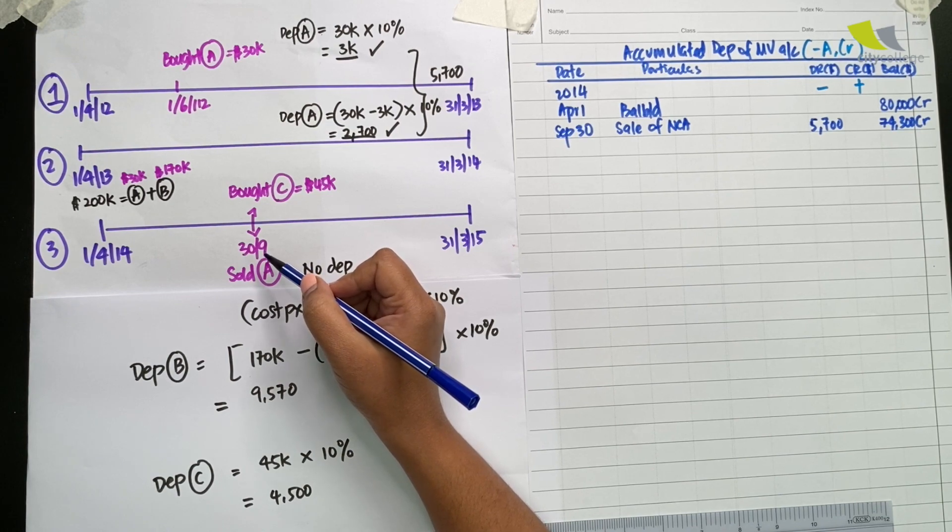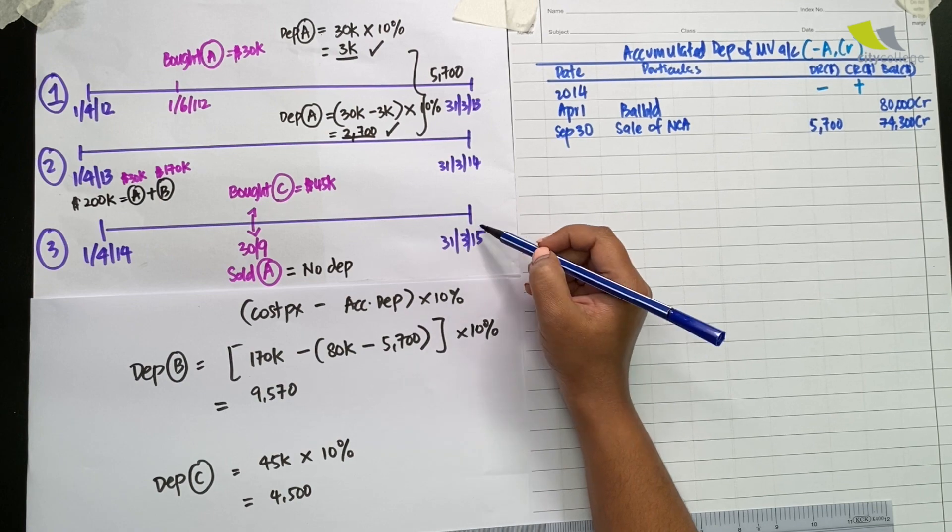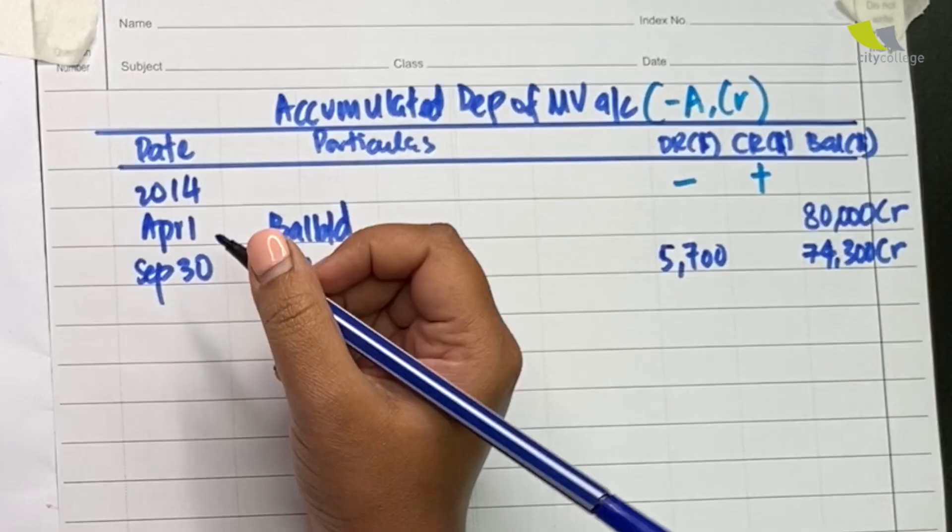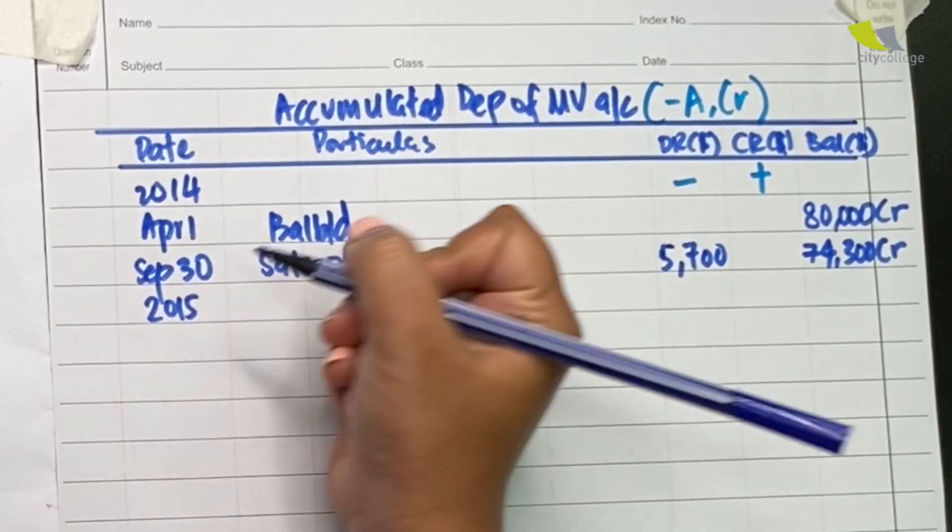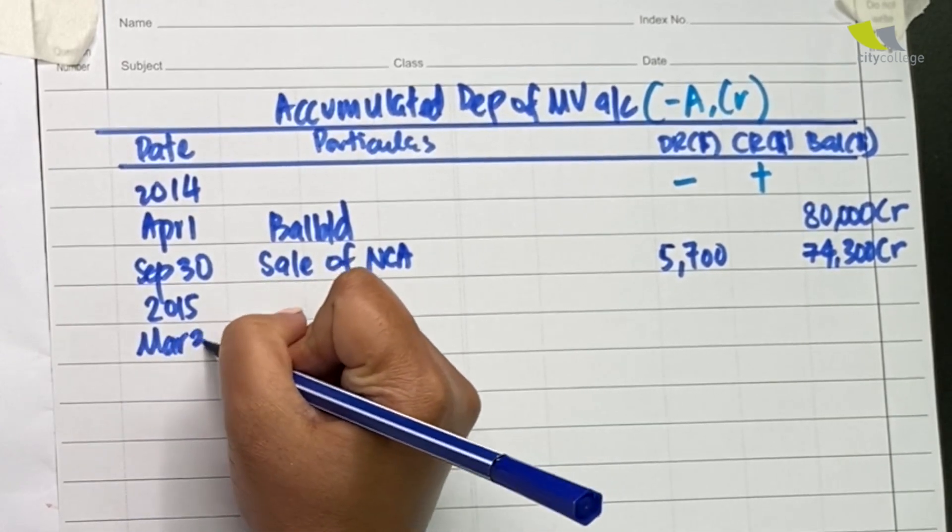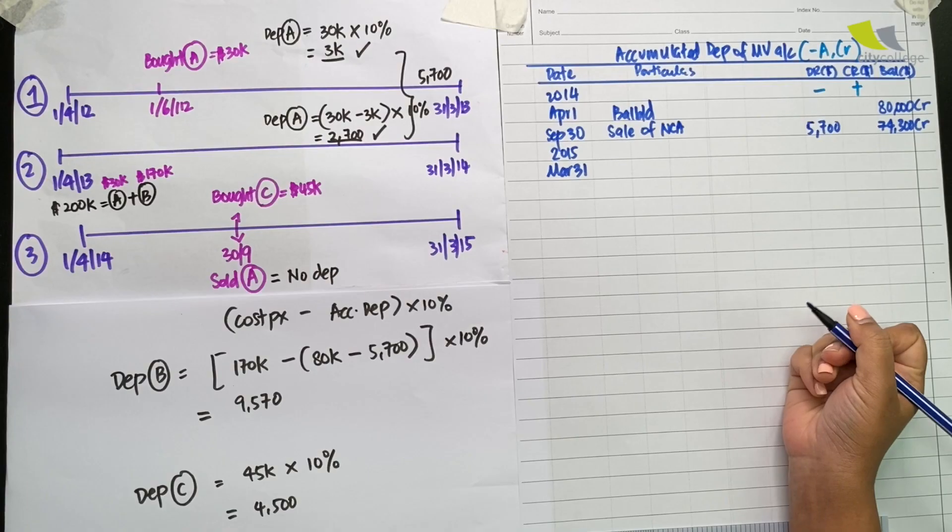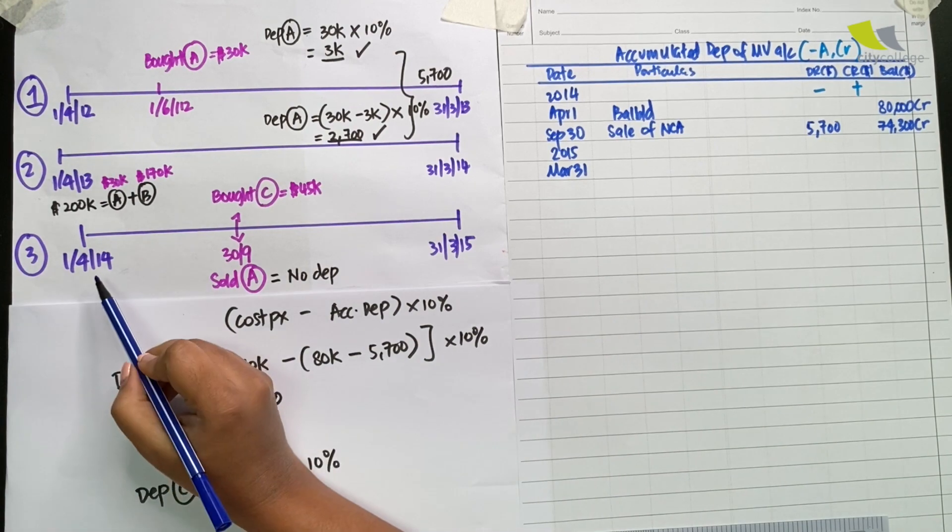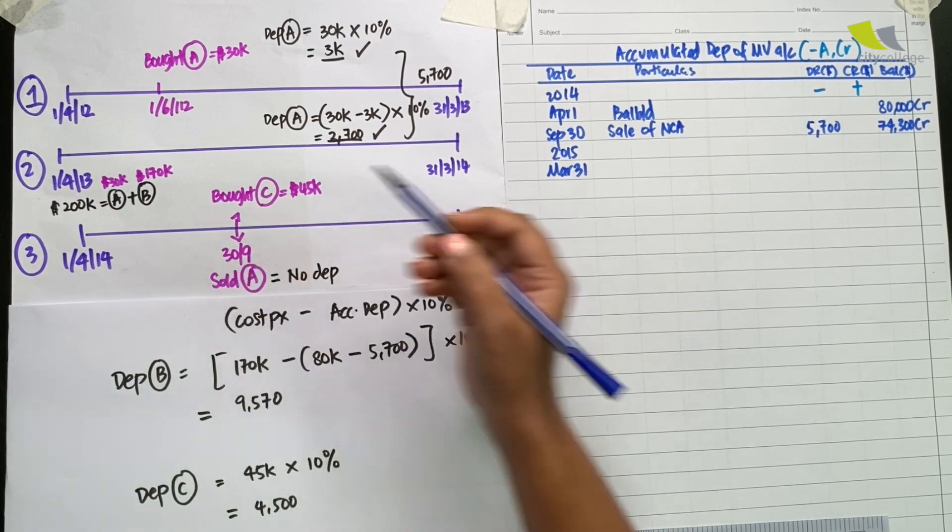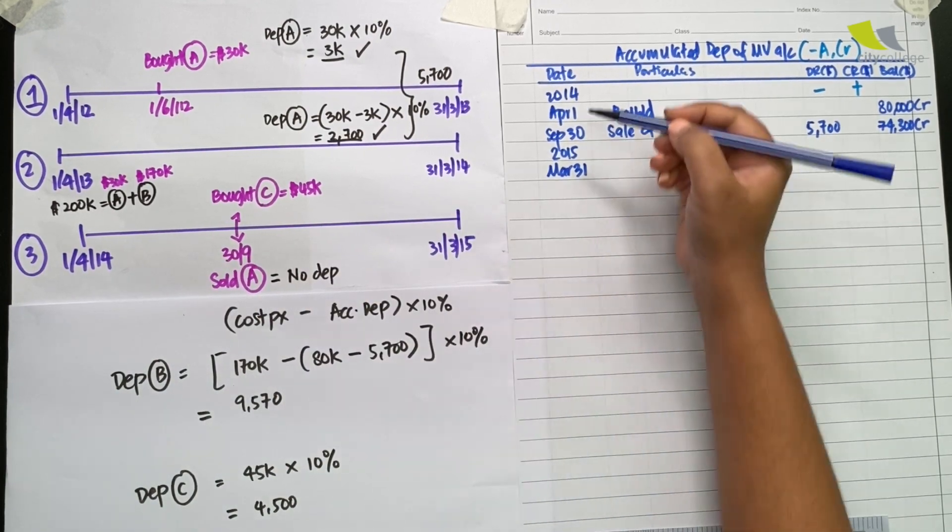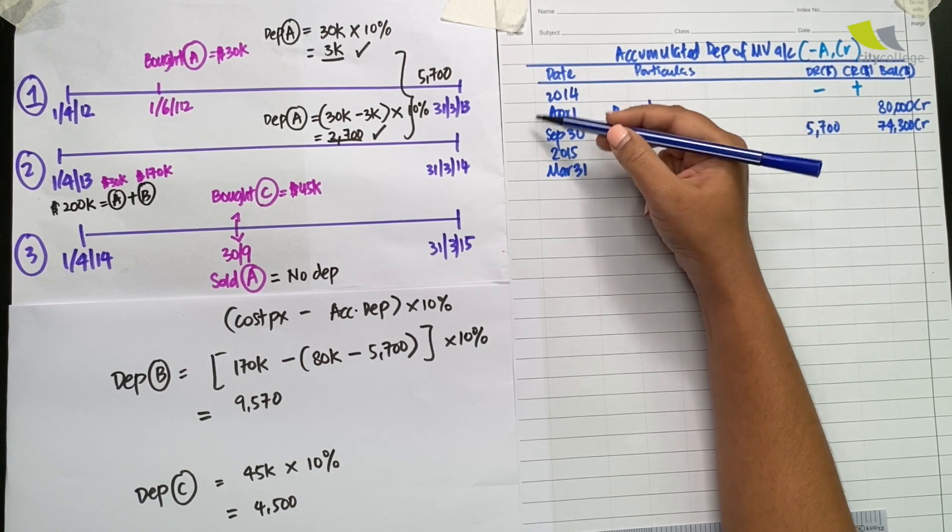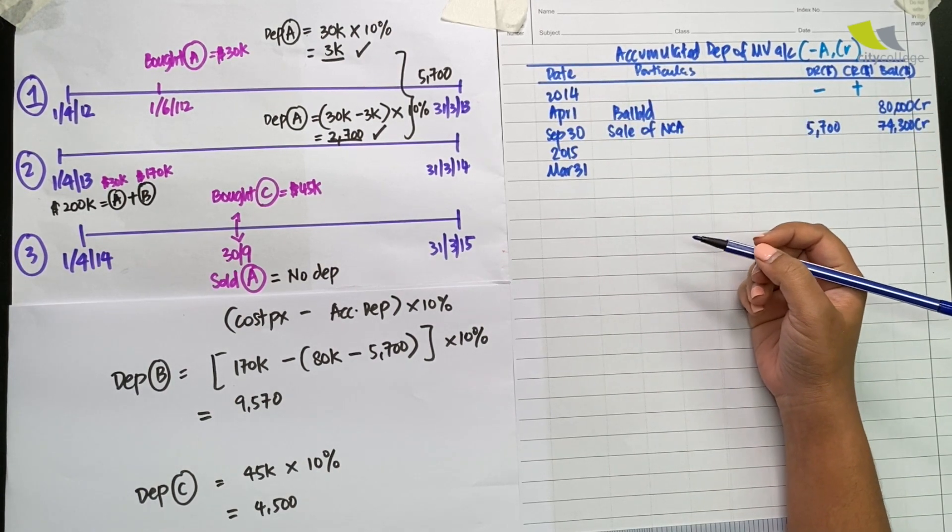Now we can move on to calculating the depreciation for B and C as at the year-end 31st March. The calendar year changes to 2015 now and we move on to the year-end date, March 31st. Bear in mind that this entire 12-month period starts in 2014 and ends in 2015. I have two calendar years, 14 and 15, but they are all within the same 12-month accounting period.